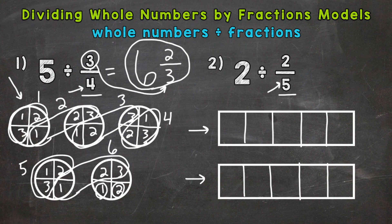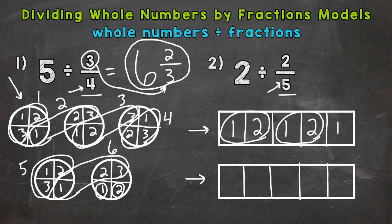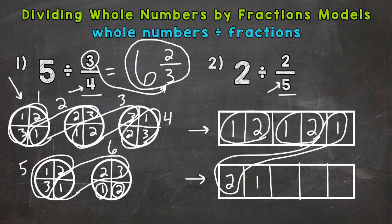So let's count off and see how many groups of 2 fifths we can make. So this is 1 fifth, 2 fifths. That's one whole group. 1 fifth, 2 fifths. 1, 2 fifths. Come across to circle that whole there. 1 fifth, 2 fifths. Another whole group. 1 fifth, 2 fifths.